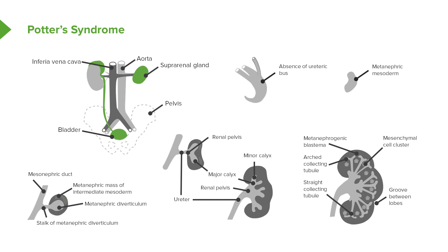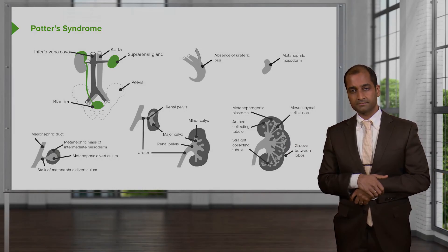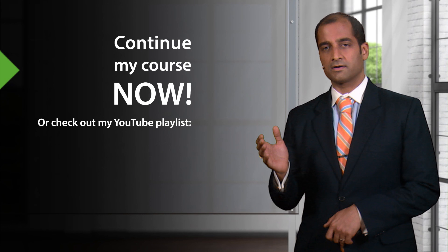At some point, when we get into what we're seeing here with the letters — for example, letter A gives you the two different components that are not united: the ureteric bud diverticulum and the blastema. By the time you get to letter D, you'll notice there's perfect communication between the diverticulum and the blastema. That's all I wish for you to take out of this particular illustration.